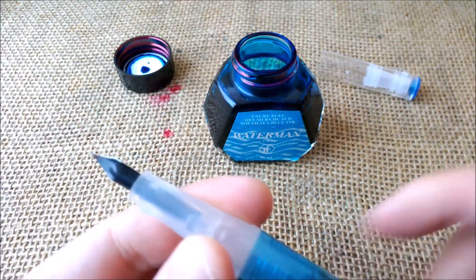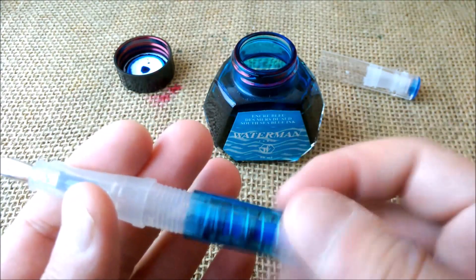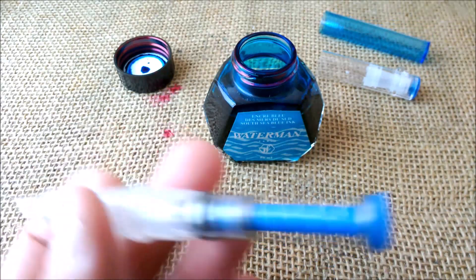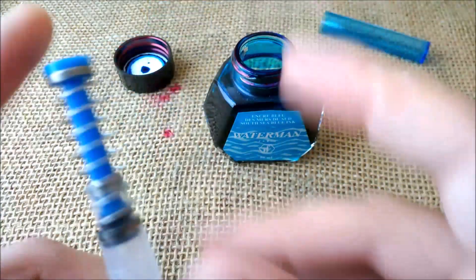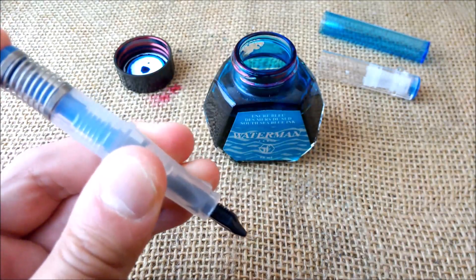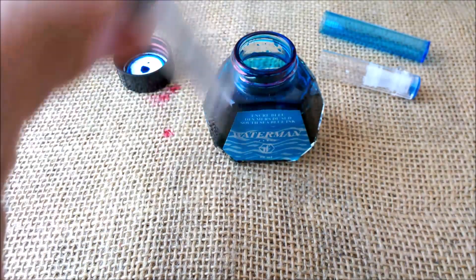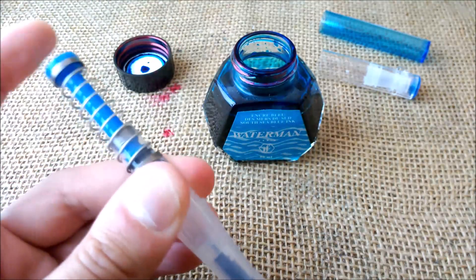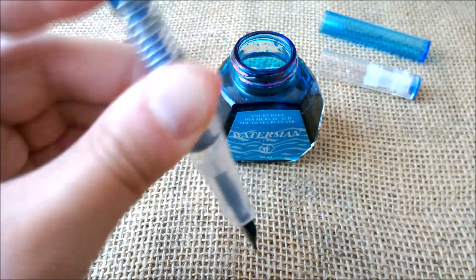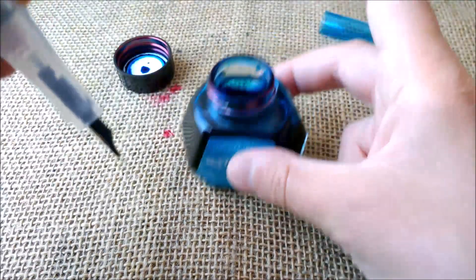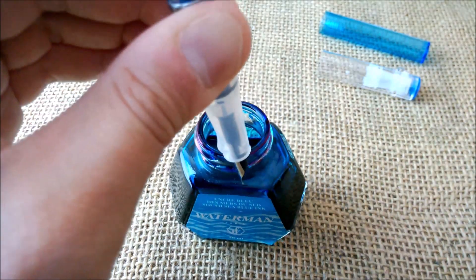As you can see, we have here this system. It has a plunger: when it is depressed there is no air inside, and then if you release it, it will create a vacuum and the ink will be inside the pen. So let's try to see how it works.